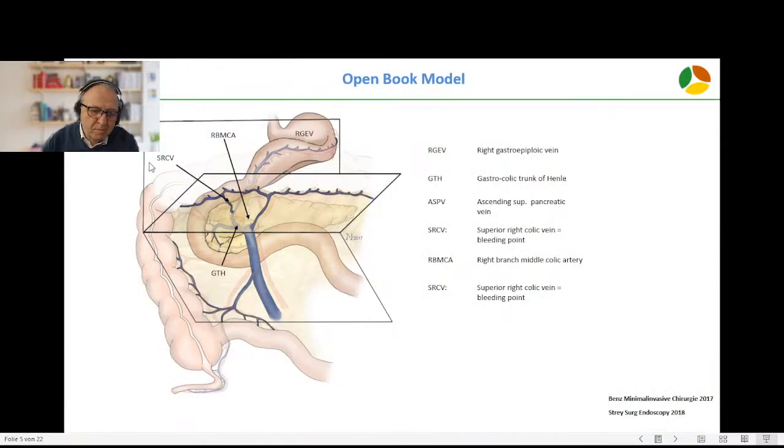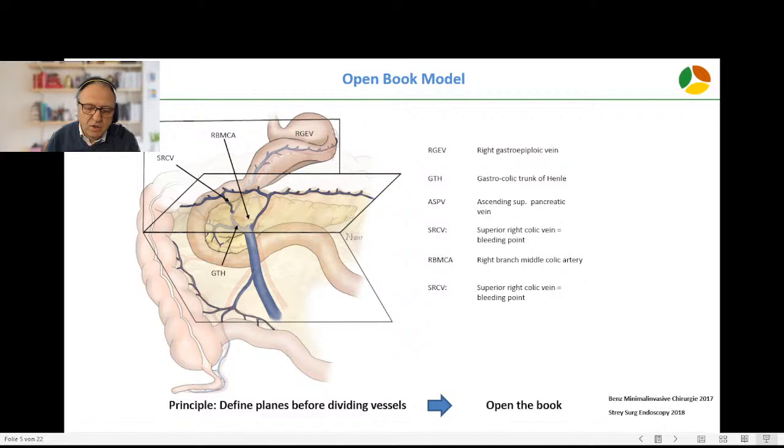This is the open book model in which the operation site is imagined like a small booklet, in which each page of the booklet is represented by a meso: the iliocolic meso, the transverse mesocolon, and the gastric meso. This booklet is held together on the back on an axis along the pancreas. The operation based on this model is that before you divide the vessels within each page, you have to dissect it from both sides. You have to open the book before you divide the vessels.